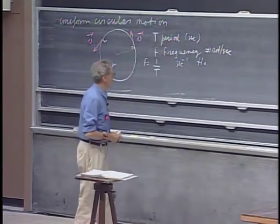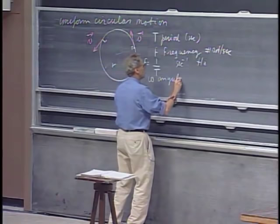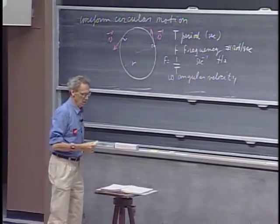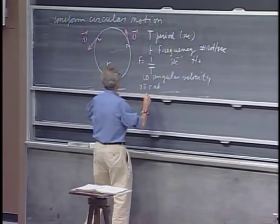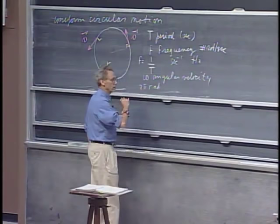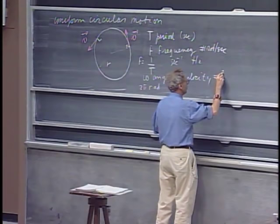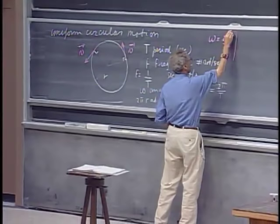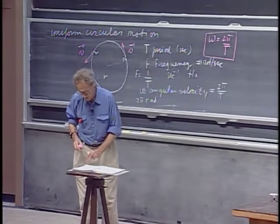We also introduce angular velocity, omega, which means not how many meters per second, but how many radians per second. Since there are two pi radians in one full circle, and it takes T seconds to go around once, it is immediately obvious that omega equals two pi divided by T. This is something I would like you to remember: two pi radians in capital T seconds.